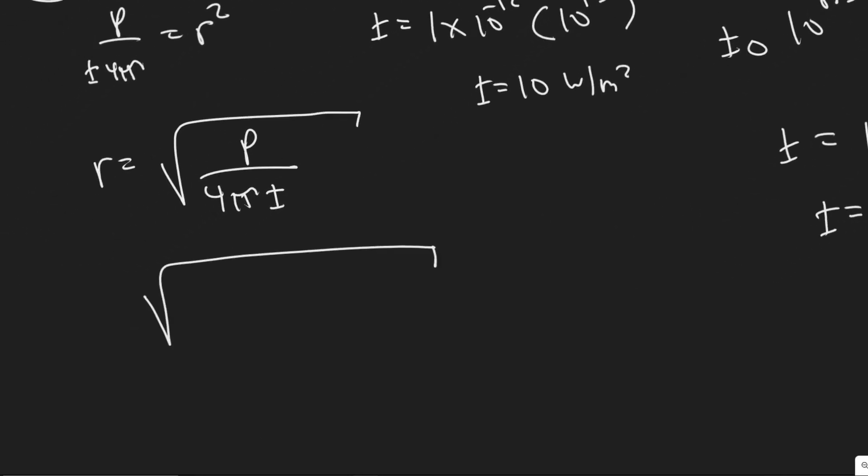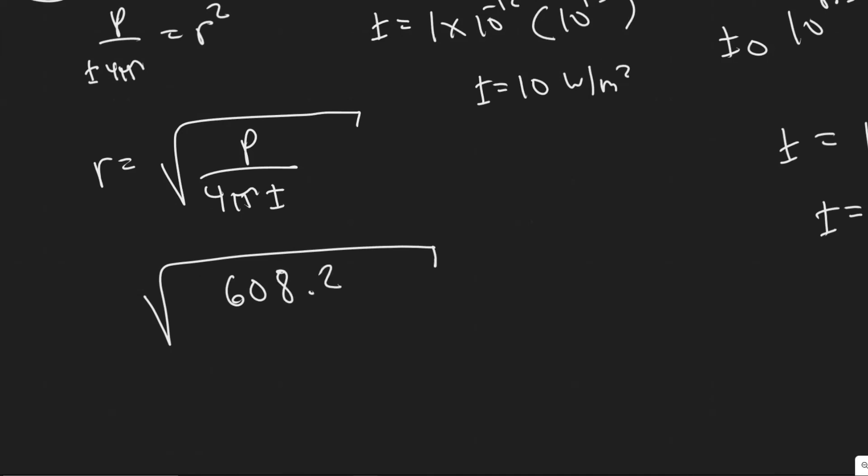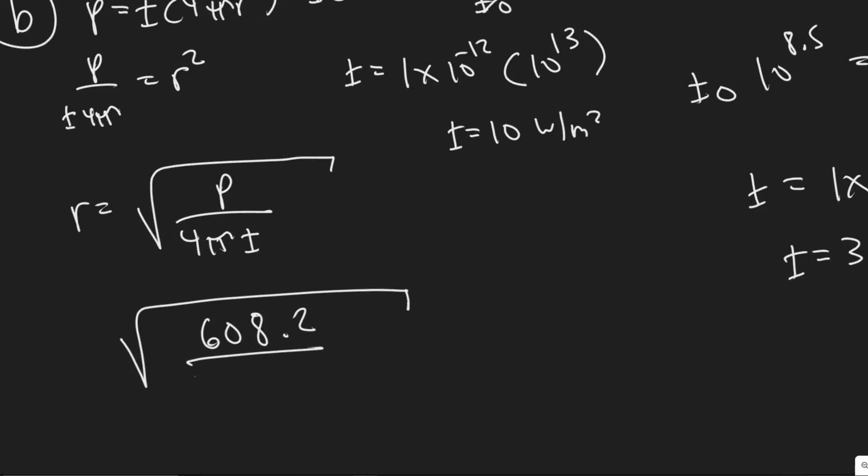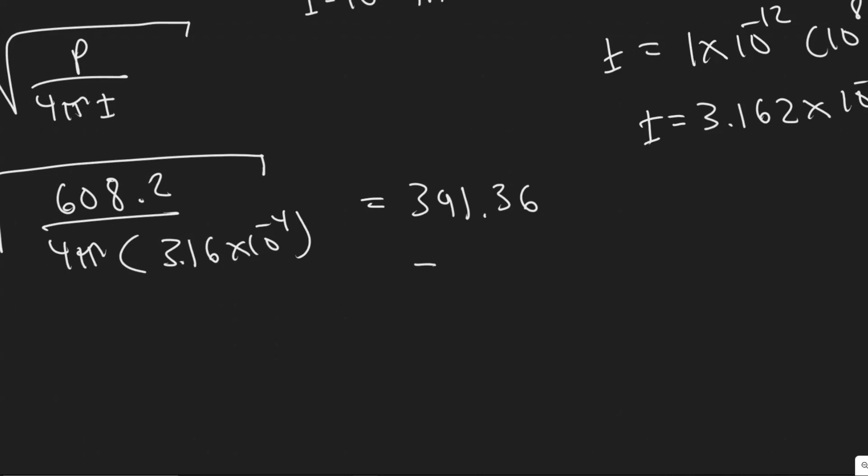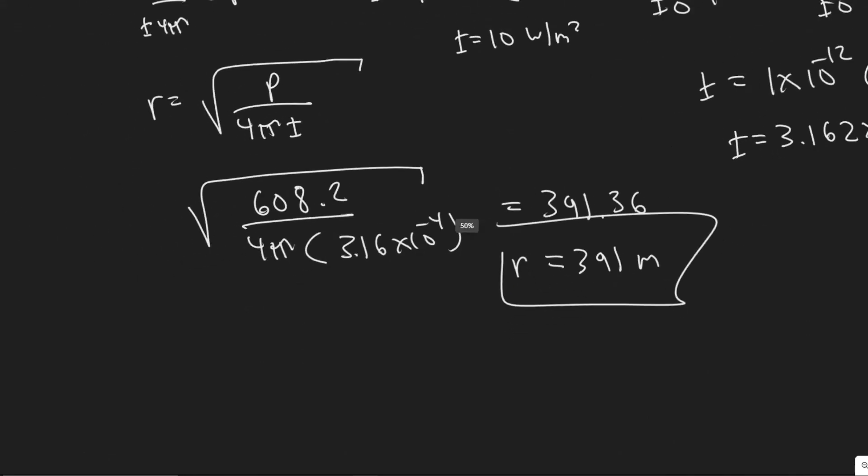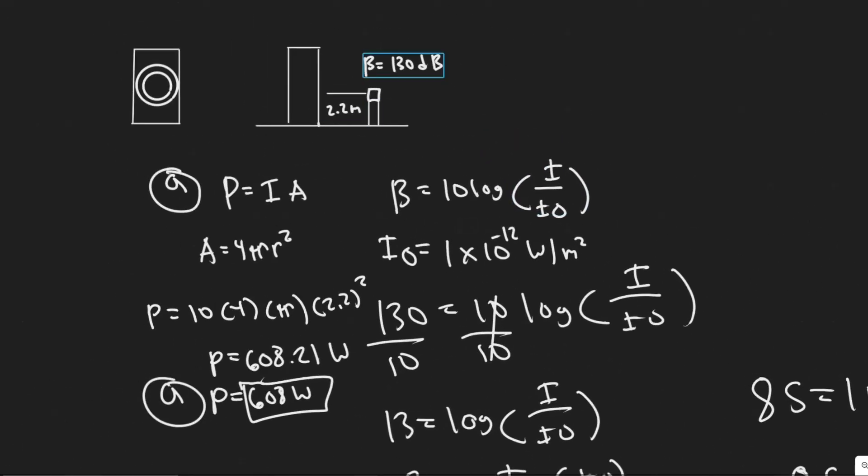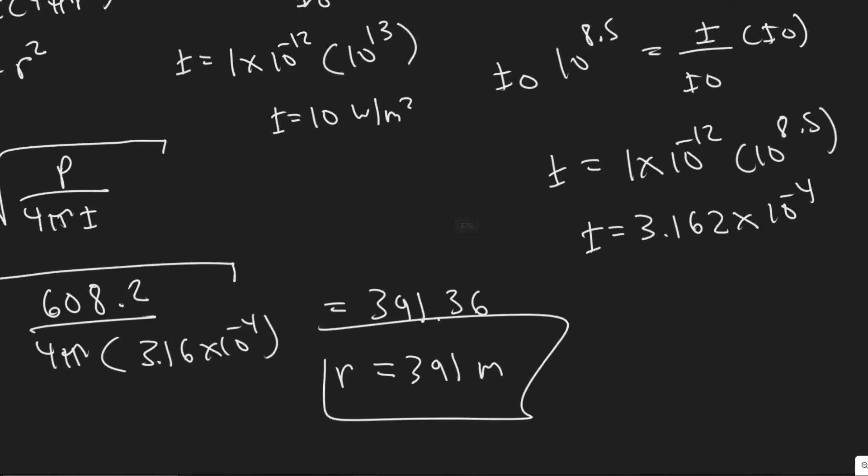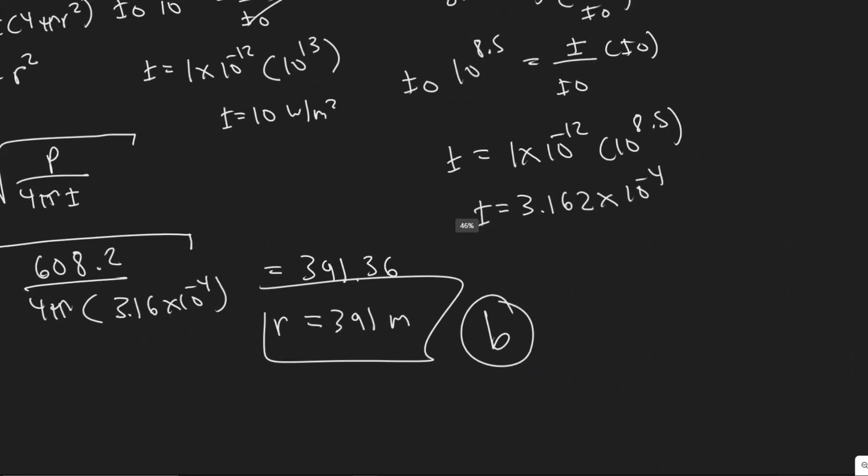We can actually plug it in here to determine the radius. So power output, 608.2. And then divide by 4π times the intensity 3.16 times 10 to the minus 4. So let's go ahead and see what this is now. So 608.2 divided by 4 times π times 3.16 times 10 to the minus 4. So when you do this, you'll get 391.36. So I'm just going to round to 391 to get the full value. So 391 meters, obviously that's pretty far away. So your radius here, 391 meters. So you actually have to be pretty far from it. Because keep in mind, 2.2 meters is 130 decibels. So to get to 85, we'd have to be way farther out. So 391 meters, that's your answer to B.